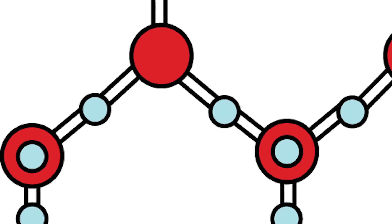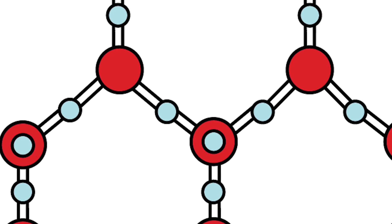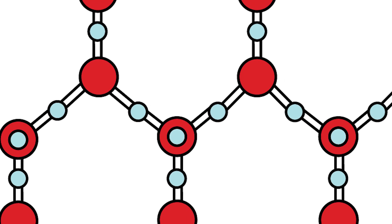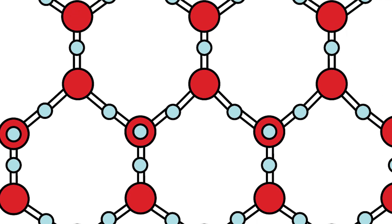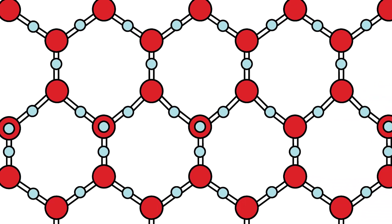The explanation we keep hearing is that time crystals are crystals whose atomic structures repeat both in space and time. Like the reason crystals become crystals is because the atoms of that particular element bond in such a way that they repeat in patterns over and over again, which creates a crystalline structure — that's repeating in three dimensions. But time crystals repeat in four dimensions. They also repeat in time.